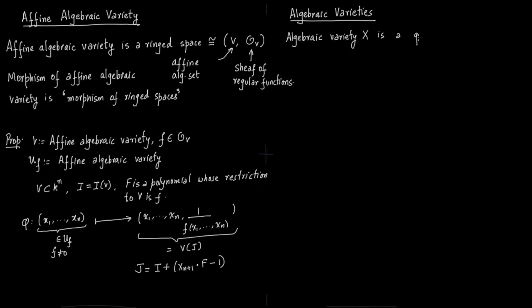So now what is an algebraic variety? We fix algebraic variety X. This is a quasi-compact ringed space, that is it is covered by a finite number of sets, and this is locally isomorphic, so isomorphic locally to an affine algebraic variety.